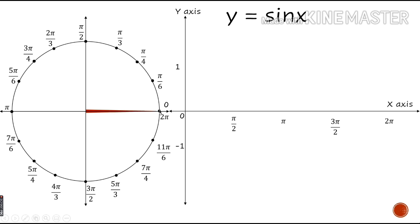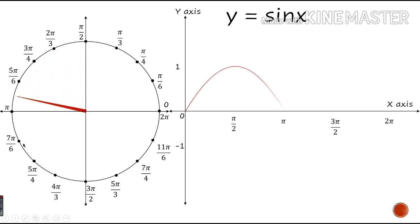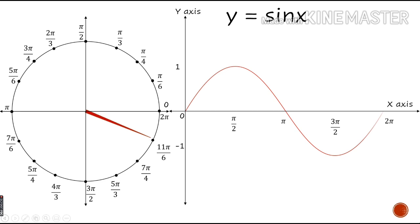When x is equal to 0, sin 0 is 0, so the first point is (0, 0). As x values progress, observe how the graph for y equal to sin x progresses. After one complete rotation, this curve intersects the x-axis at 0, pi, and 2 pi. In the first quadrant, from 0 to pi by 2, the y value increases from 0 to 1.